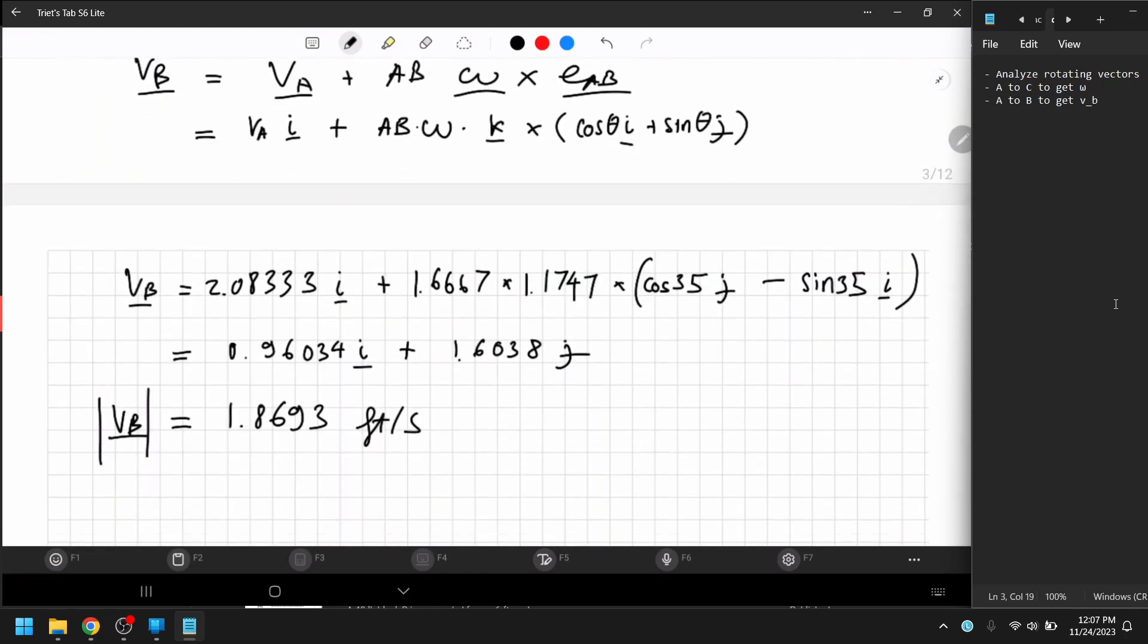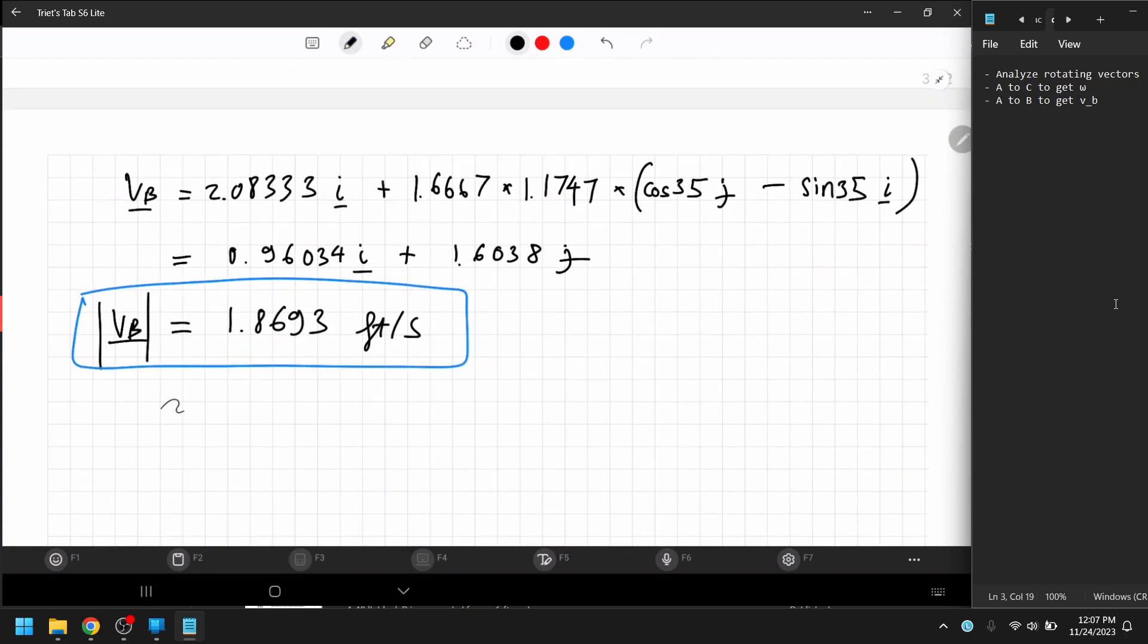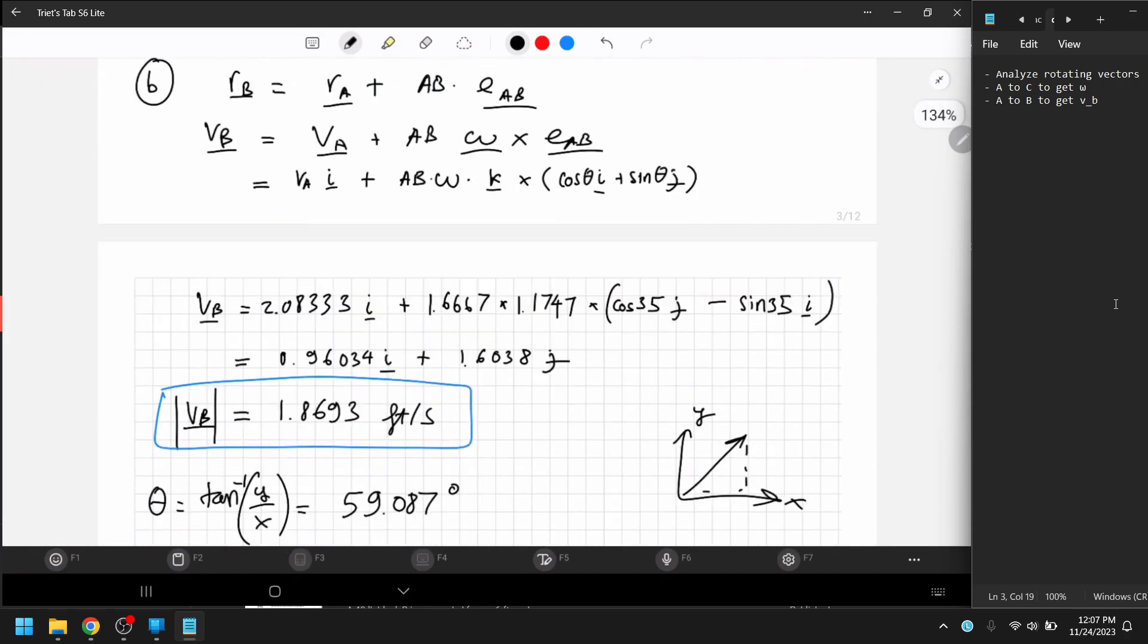and then the angle, we just do, tangent, it would be x, y, if you have tangent of y over x, that should be 9.087 degrees, yeah, that's about right. Okay.